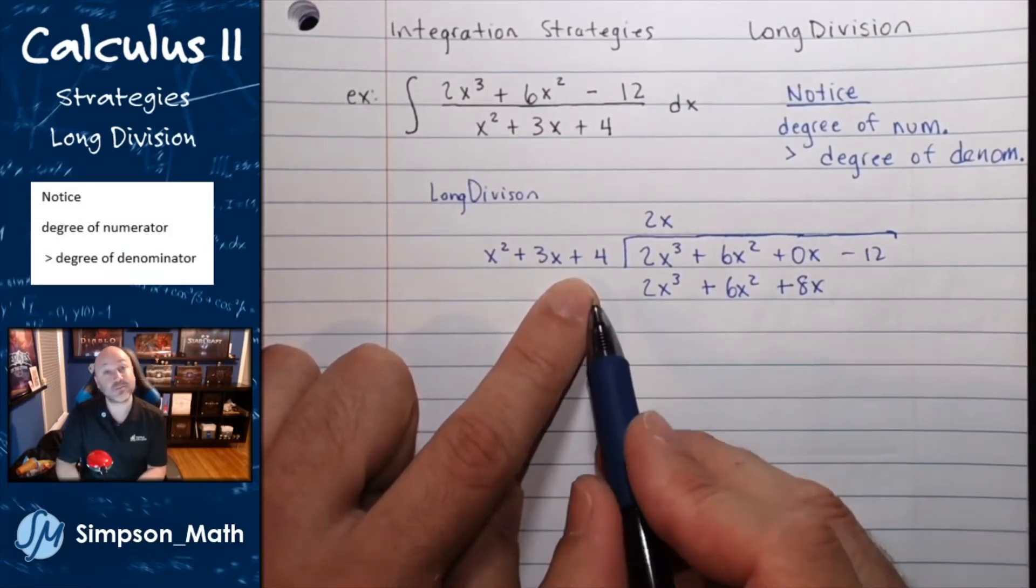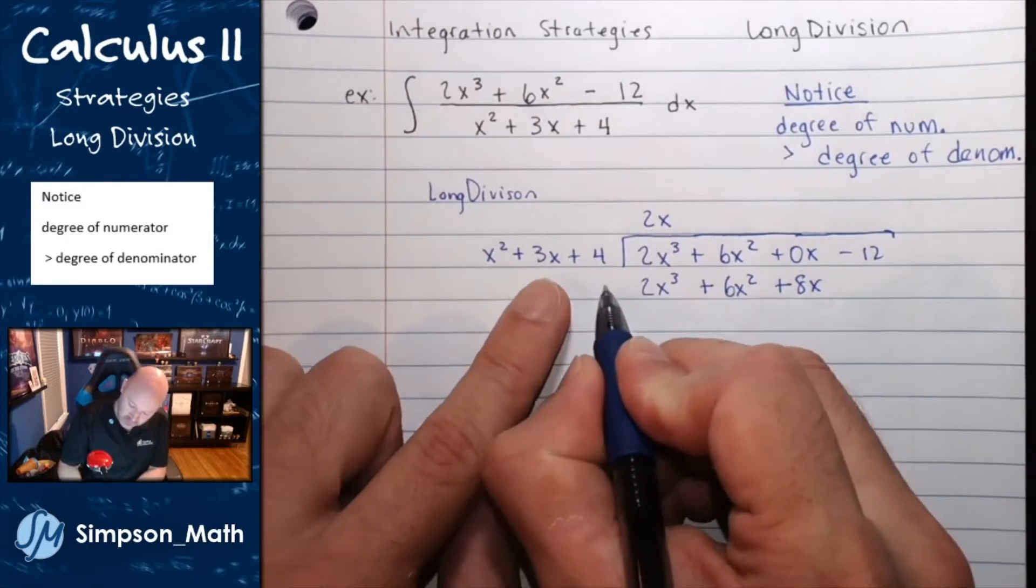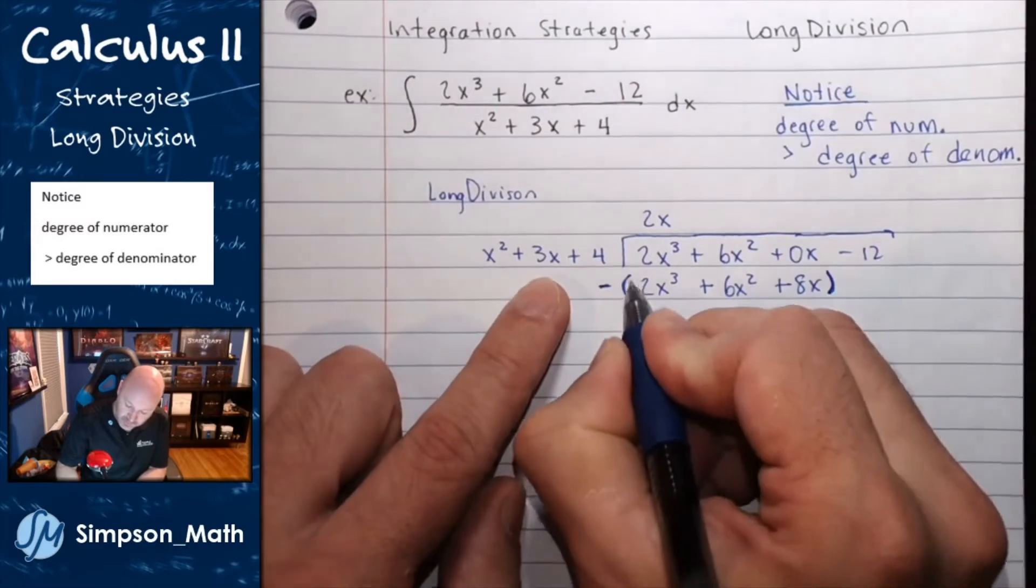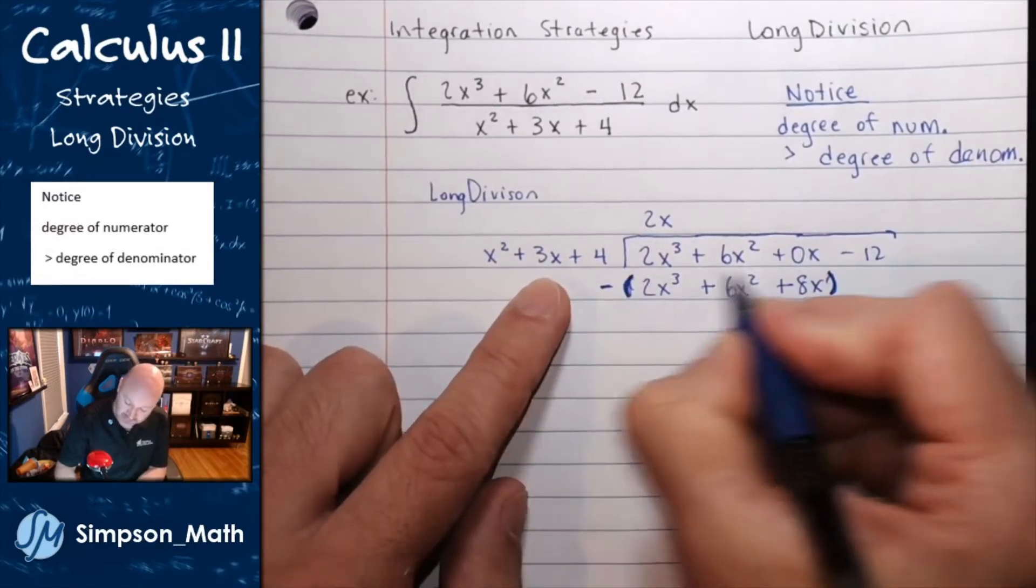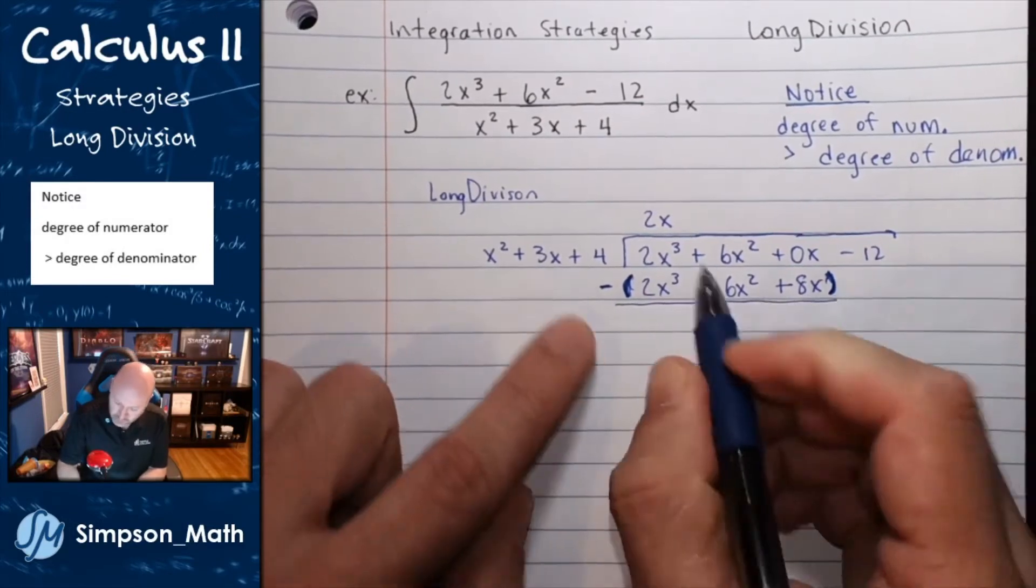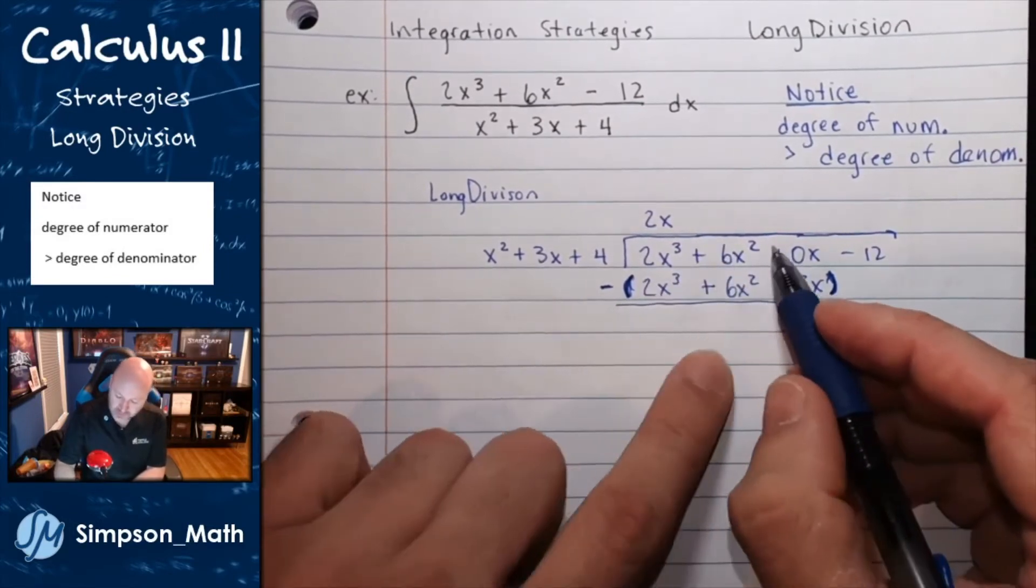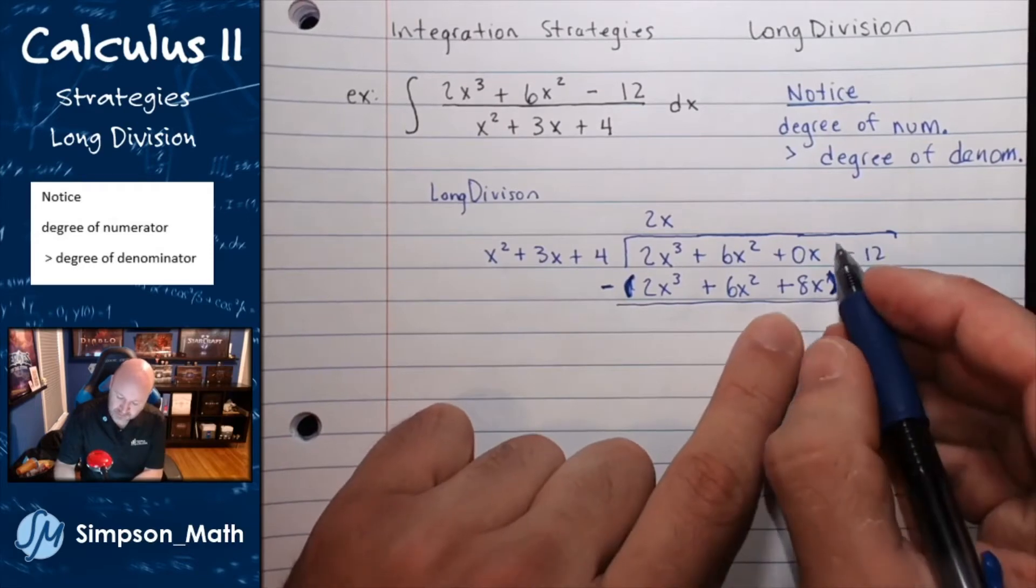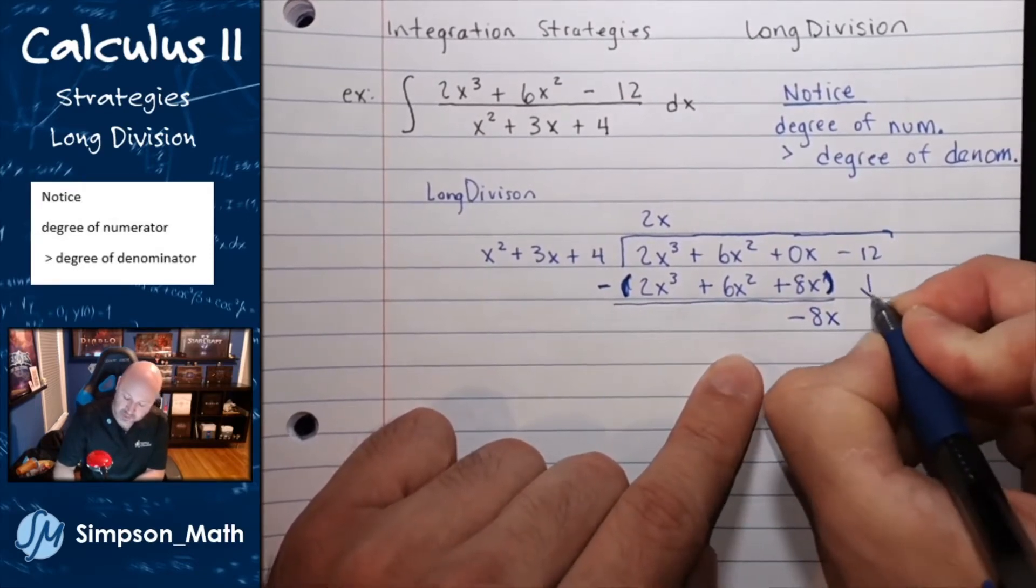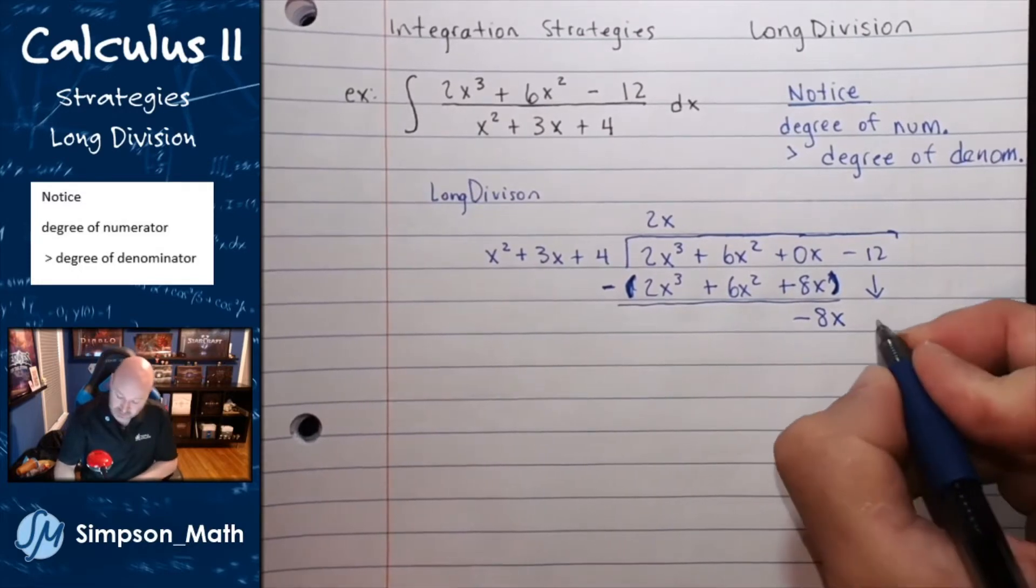Now, I need to go through and subtract all of those terms. This is the step that usually trips up some students - they forget to subtract every term. These cancel, those cancel. I'm left with negative 8x. And then, we drop whatever is remaining, this negative 12.